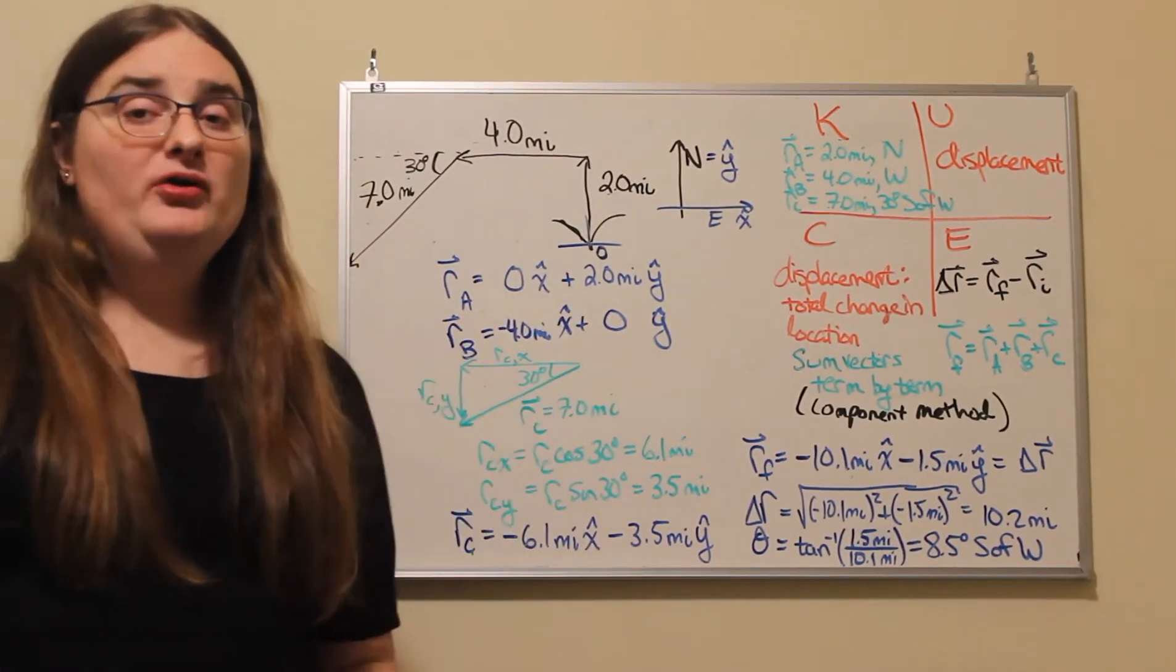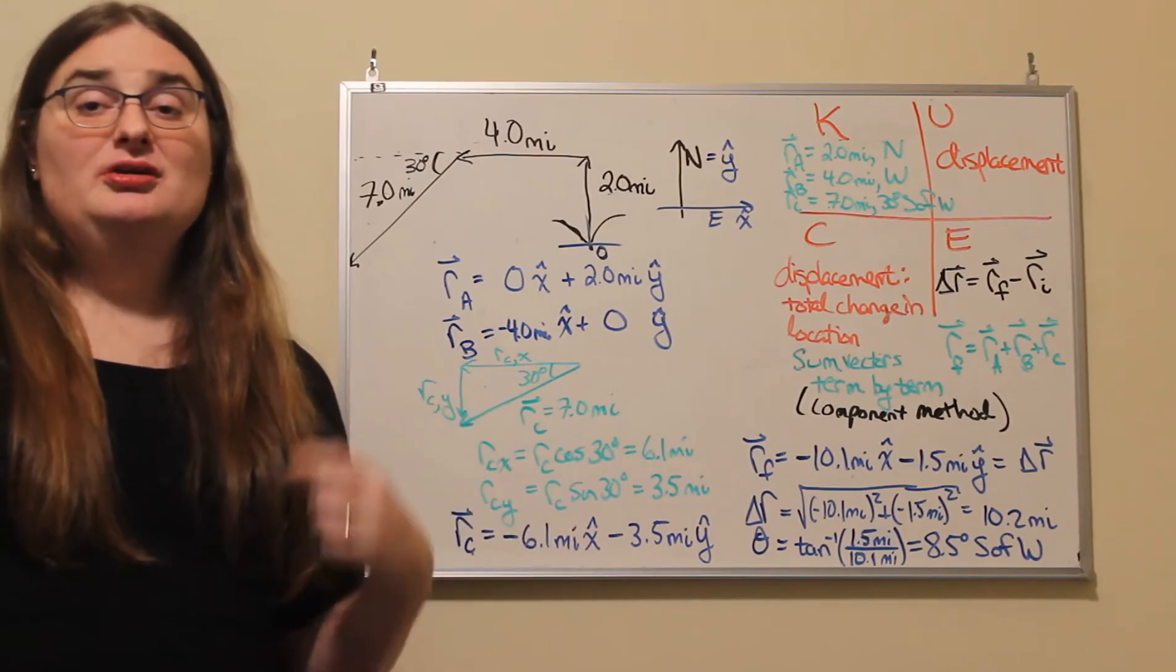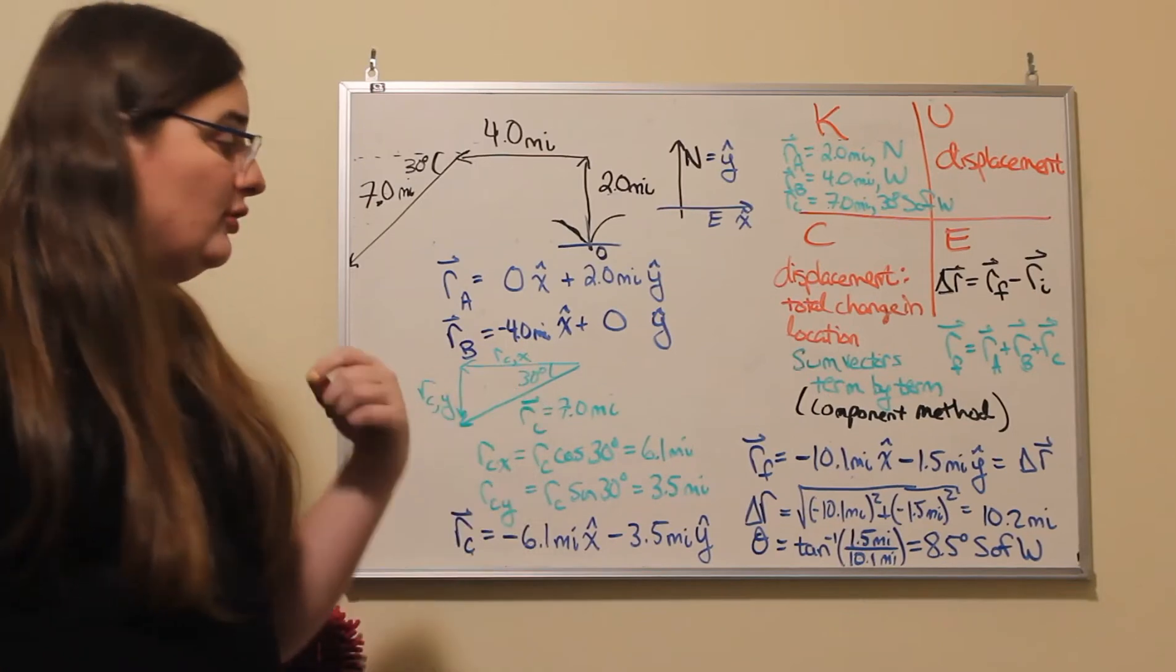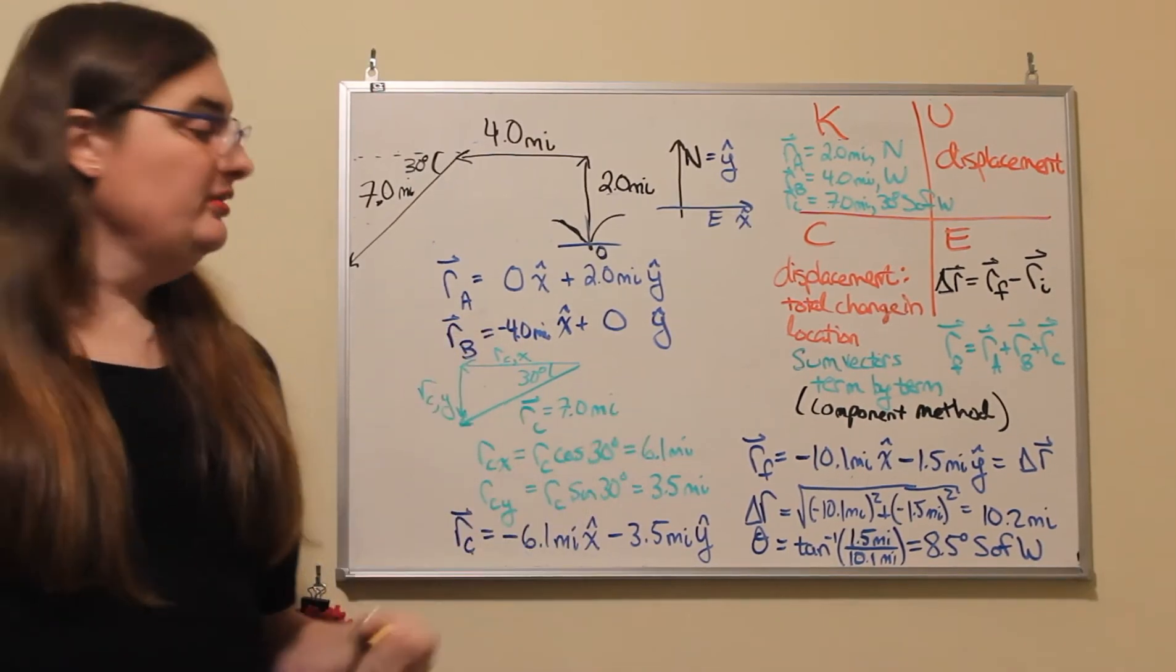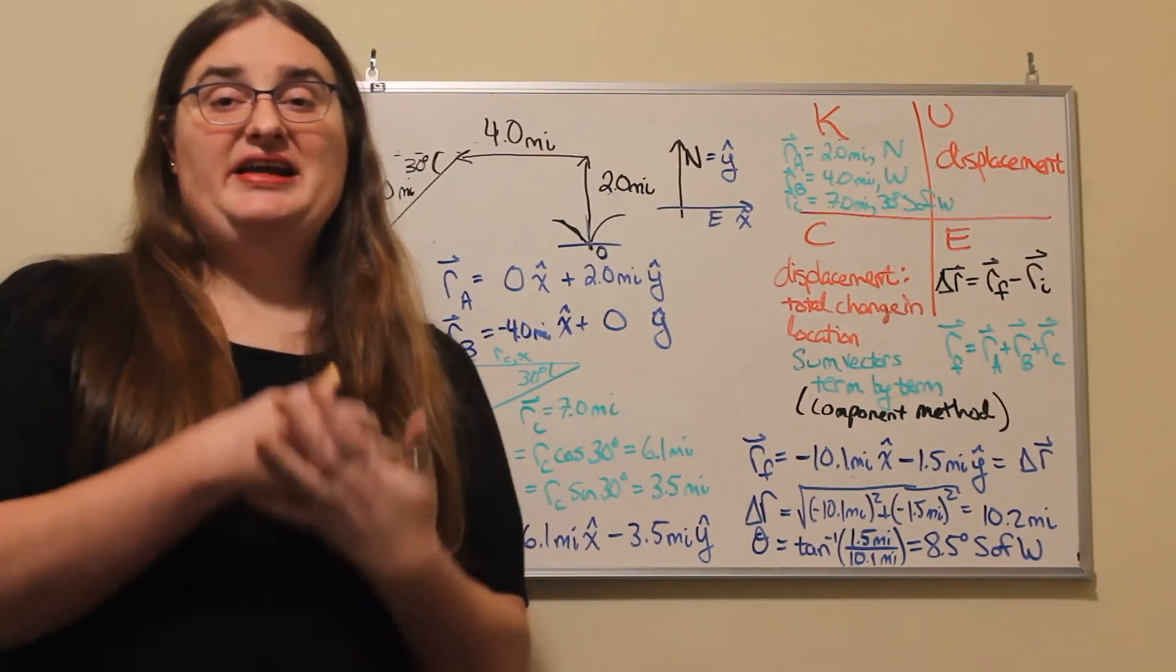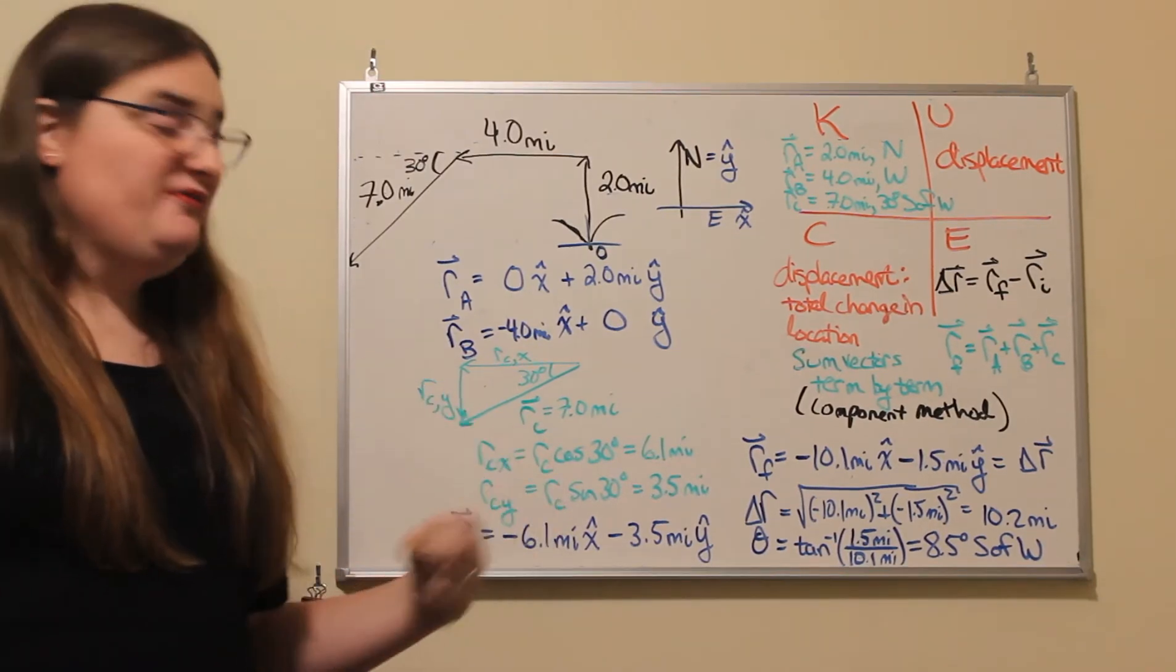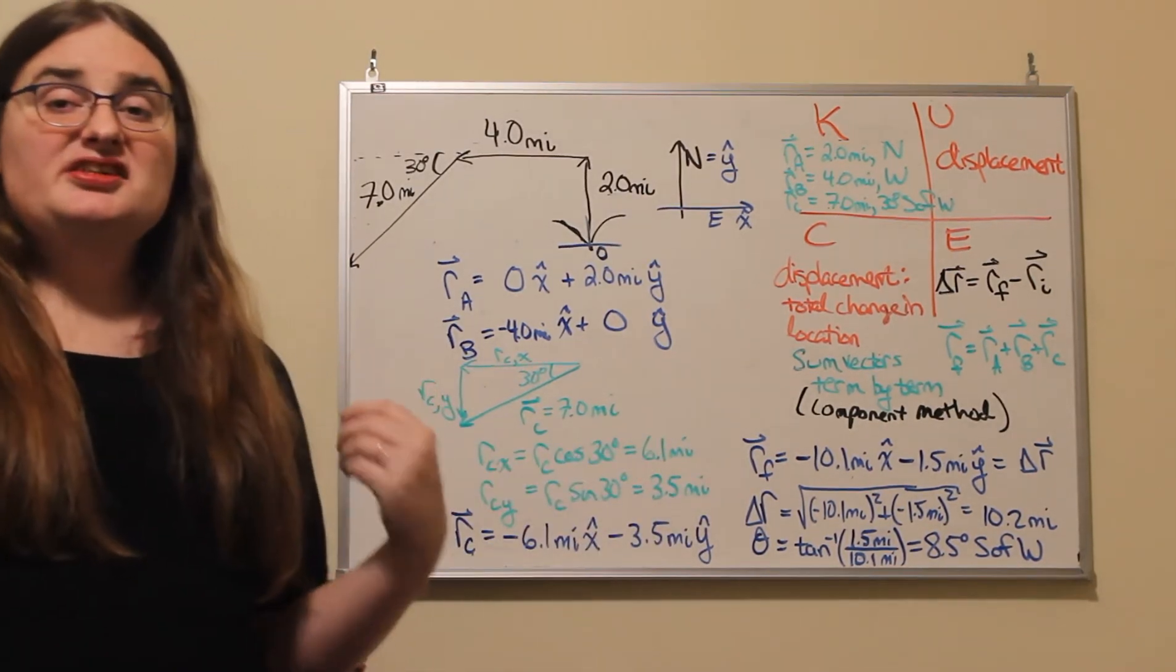And break it up into components using trigonometry, because the magnitude of my vector is the hypotenuse of the triangle that I'm making out of my x and y components and my length of my original vector. And the angle that I know is my 30 degree angle. So if my known angle is measured off my x component, the x component is the adjacent side. So I'd use cosine because cosine is adjacent divided by hypotenuse. So my adjacent side, my x component is going to be my hypotenuse, the magnitude of my vector, seven miles, times the cosine of 30 degrees, and that's going to give me 6.1 miles.